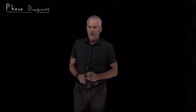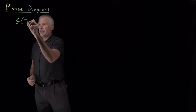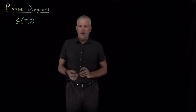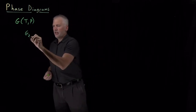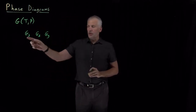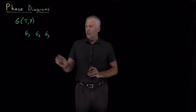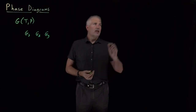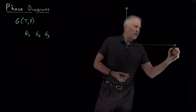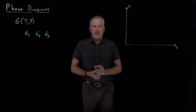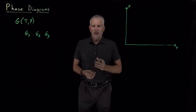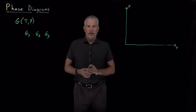The key point in understanding phase transitions is that the free energy of a substance depends on its temperature and pressure. The free energies are different for the solid phase, the liquid phase, and the gas phase. At any particular temperature and pressure, one of these may be lower than the others — that will be the most stable phase. Instead of drawing how the free energy itself depends on temperature and pressure, we can quantify at each value of T and P whether it's the solid, liquid, or gas that has the lower free energy.